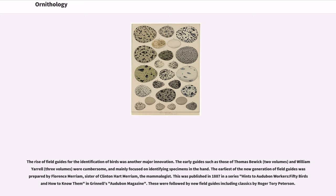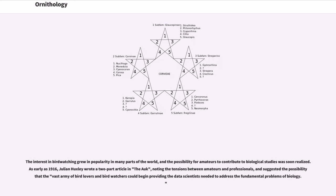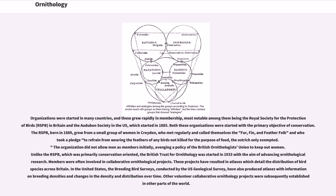These were followed by new field guides including classics by Roger Tory Peterson. The interest in birdwatching grew in popularity in many parts of the world, and the possibility for amateurs to contribute to biological studies was soon realized. As early as 1916, Julian Huxley wrote a two-part article in the Auk, noting the tensions between amateurs and professionals, and suggested the possibility that the vast army of bird lovers and birdwatchers could begin providing the data scientists needed to address the fundamental problems of biology. Organizations were started in many countries, most notable among them being the Royal Society for the Protection of Birds in Britain and the Audubon Society in the U.S., which started in 1885.